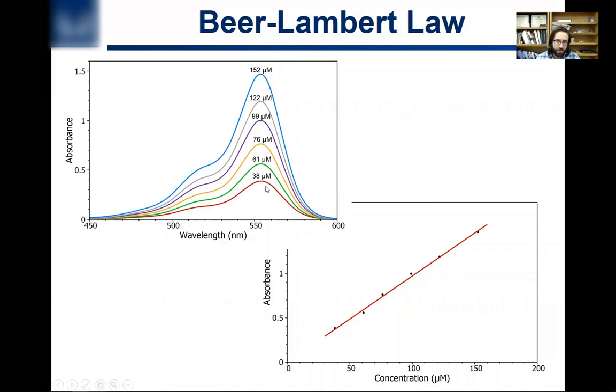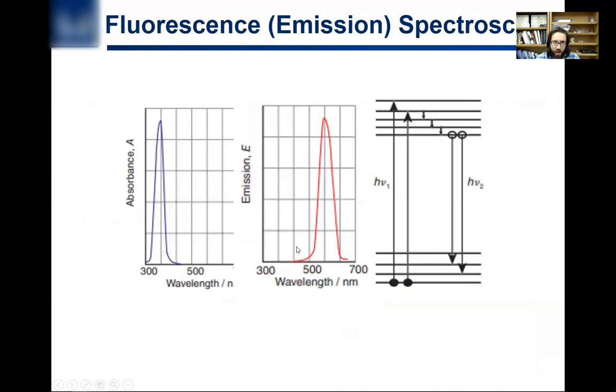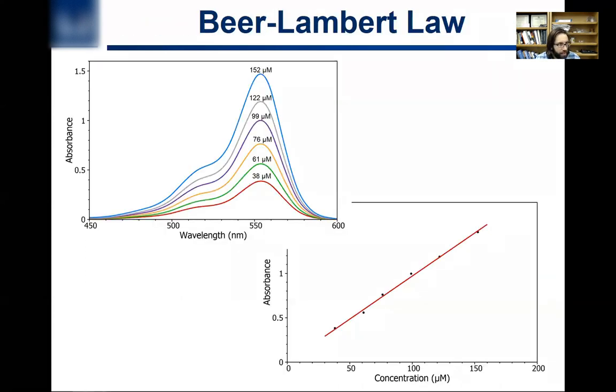And so the nice thing about this is it's all linear with respect to absorption. So you can make a calibration curve, for example, where if you double the concentration, well, you just double the height of this absorption, the height of this peak. And so then you can make a plot of concentration versus absorbance, and it should be linear if everything is working right.